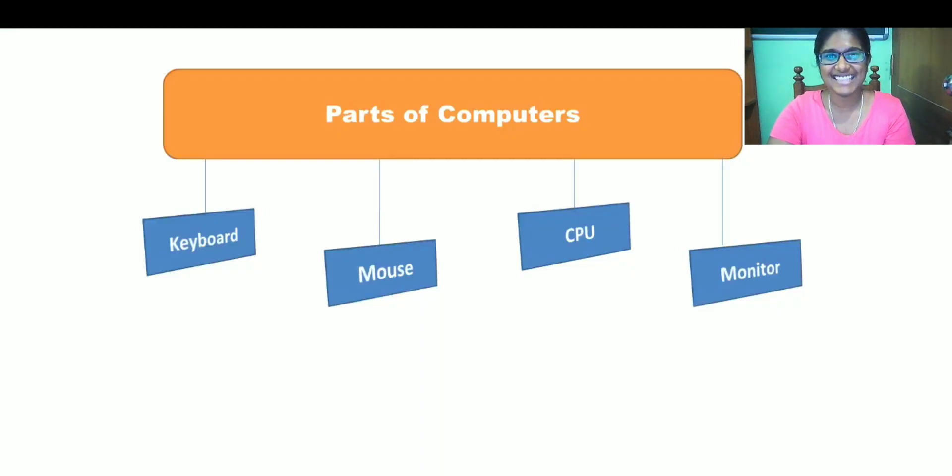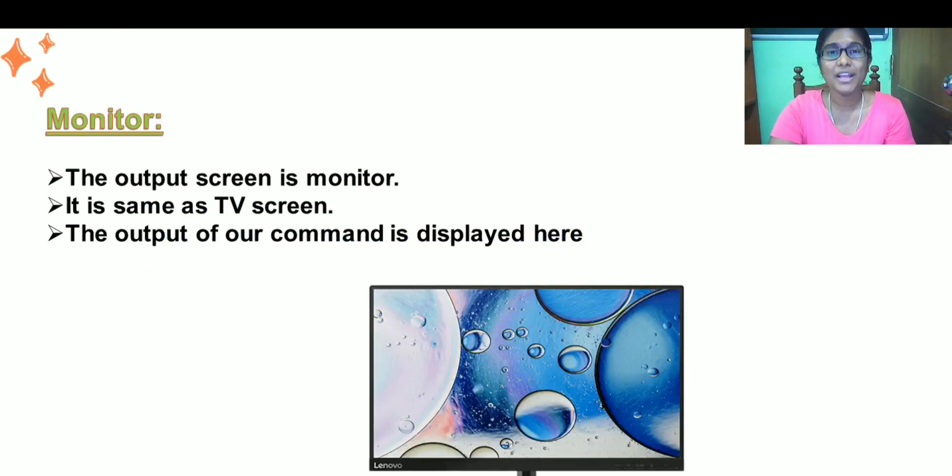Let's get started then. We all know there are four main parts of a computer: monitor, CPU, mouse, and keyboard. Let us study about them one by one.